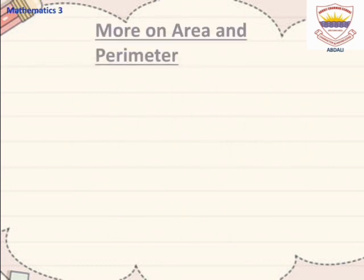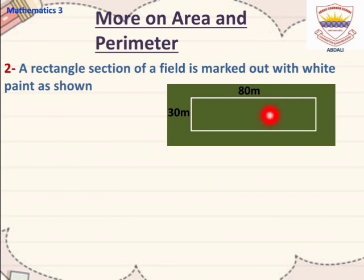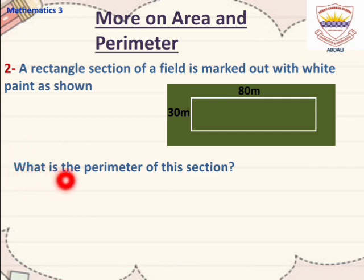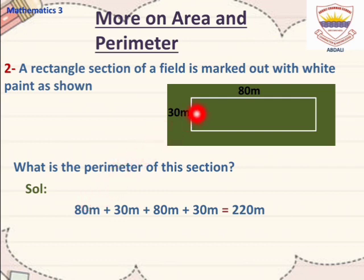Now students, let's solve another question — Question Number 2. A rectangular section of a field is marked out with white paint as shown. We have to find out the perimeter of this section. The length is 80m and the breadth is 30m.